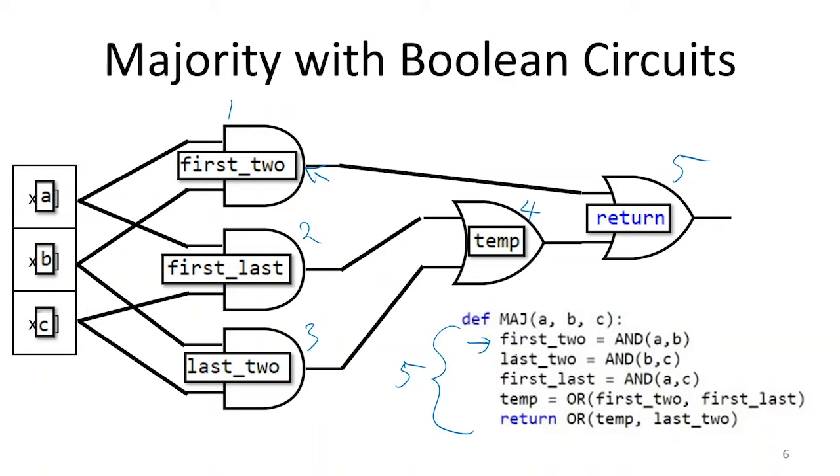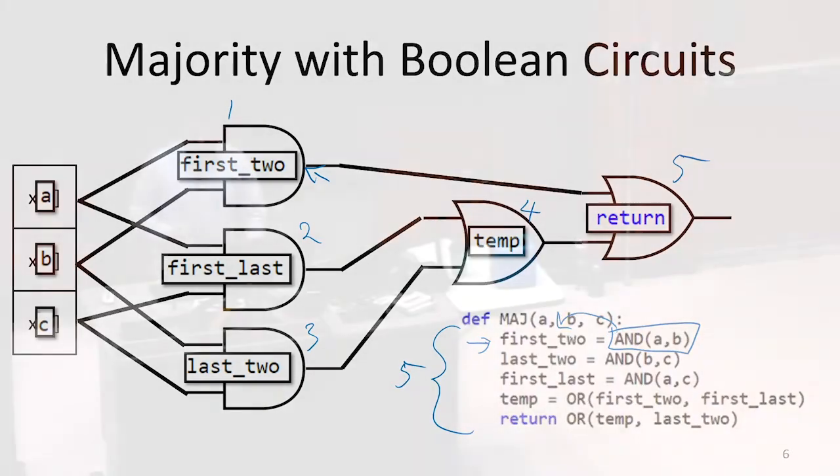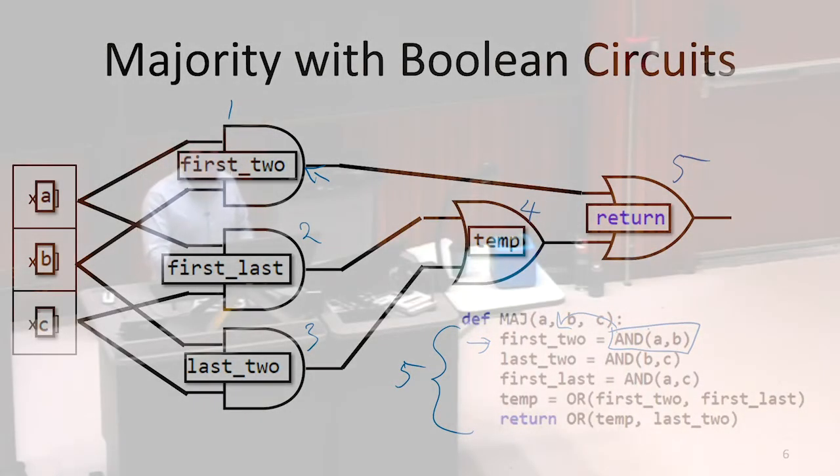By our definition of how we construct these programs, all we can do is one binary operation and then assign that to a variable. Because of that, every single binary operation has a variable and is on its own line. We could say each operation is a gate, or each variable is a gate, or each line is a gate. Based on our definition, there's going to be the same number of each of those things.